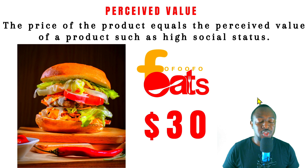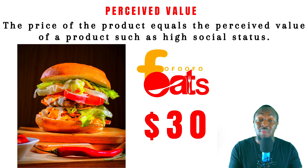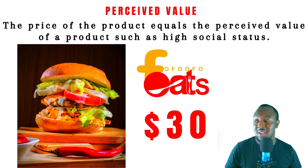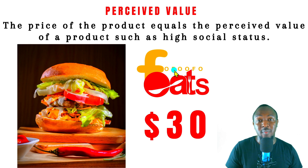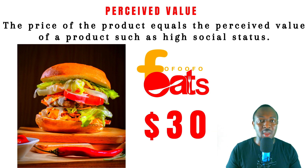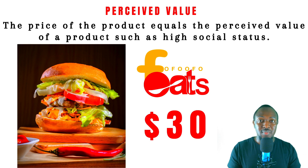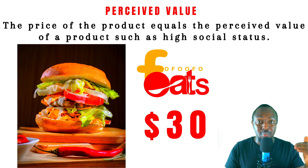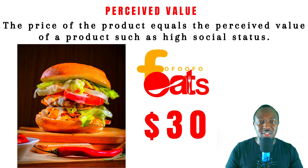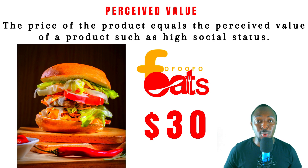Now we've got something called perceived value pricing. Let's say you have your own restaurant and you've built your brand to the point that most people see it as five-star. In that case, you can break the commodity rule. The exact same burger — instead of charging $7.30, from a high-end brand like 'Fufu Eats', you can charge $30 per burger and trust me, people will buy. This is like going to a high-end restaurant where they charge more for the same meal because they've built their brand and people respect it. If you believe in the brand you're building and people see value in it, you can increase your price — even go times 10 or times 20 — and people will still pay.